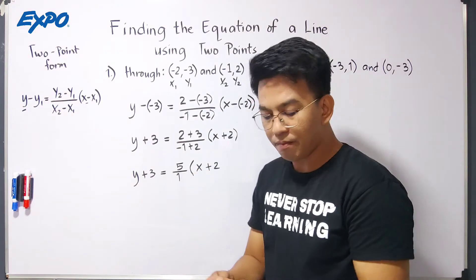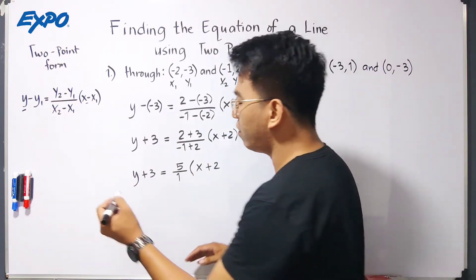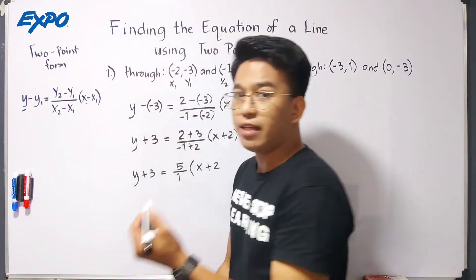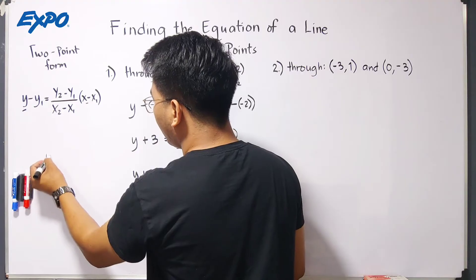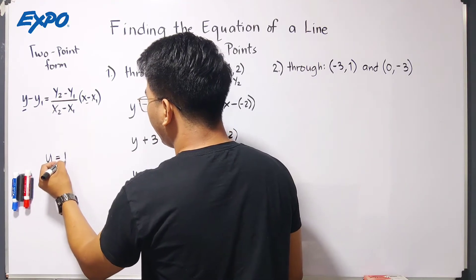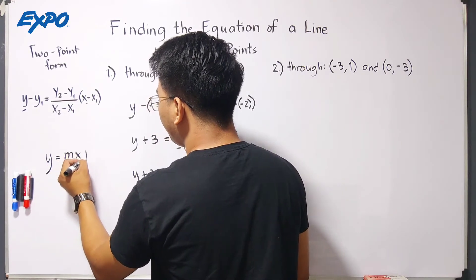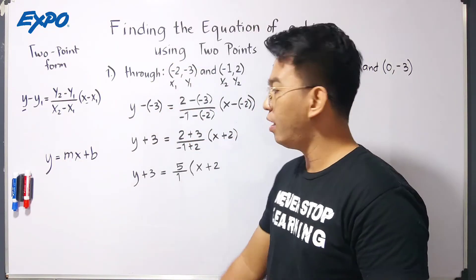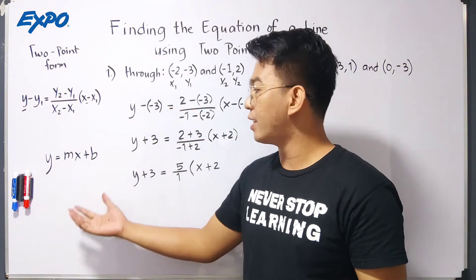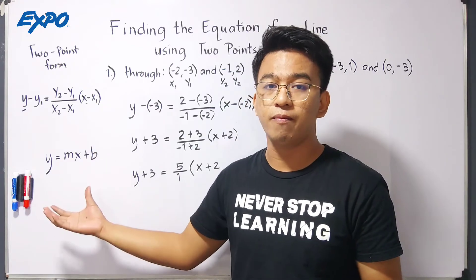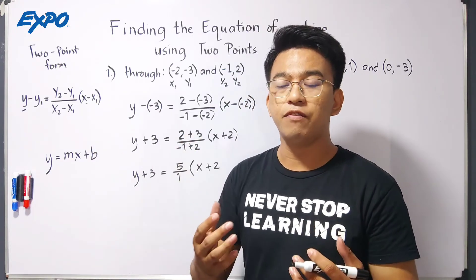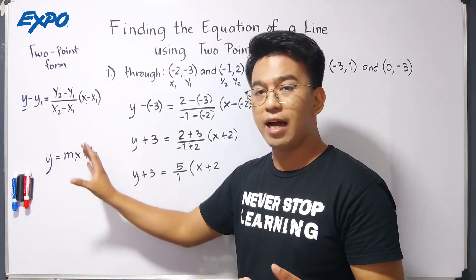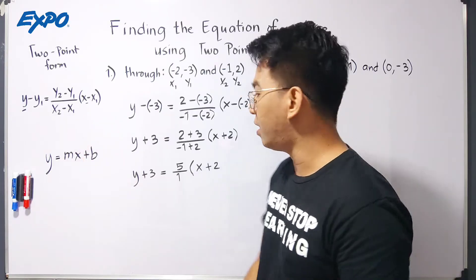Our target for the final answer is the slope-intercept form. We will try to rewrite the equation in this form, y equals mx plus b. That's our target. I know that you are familiar with this because this is our slope-intercept form.